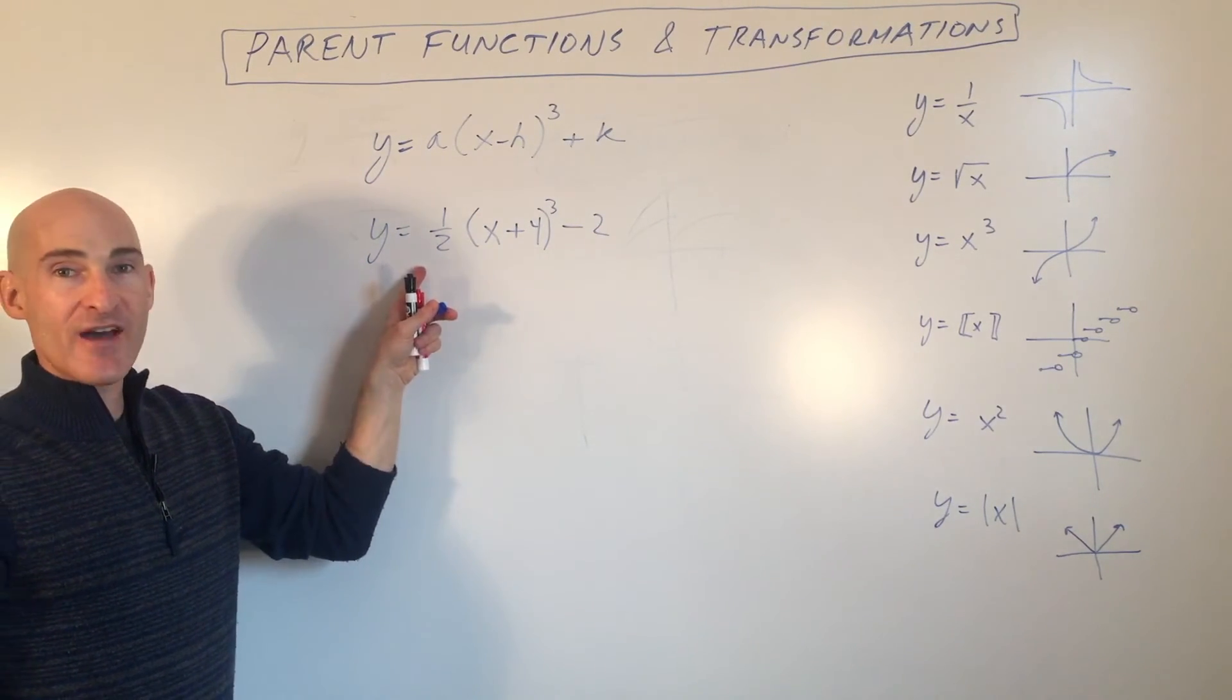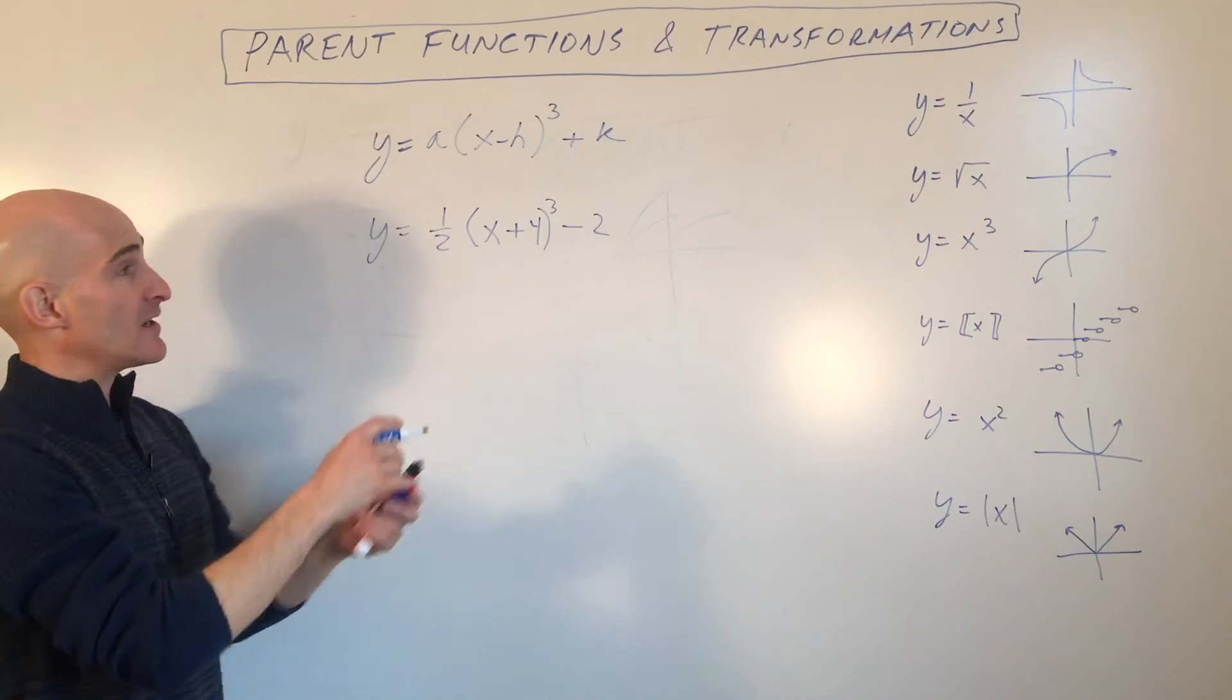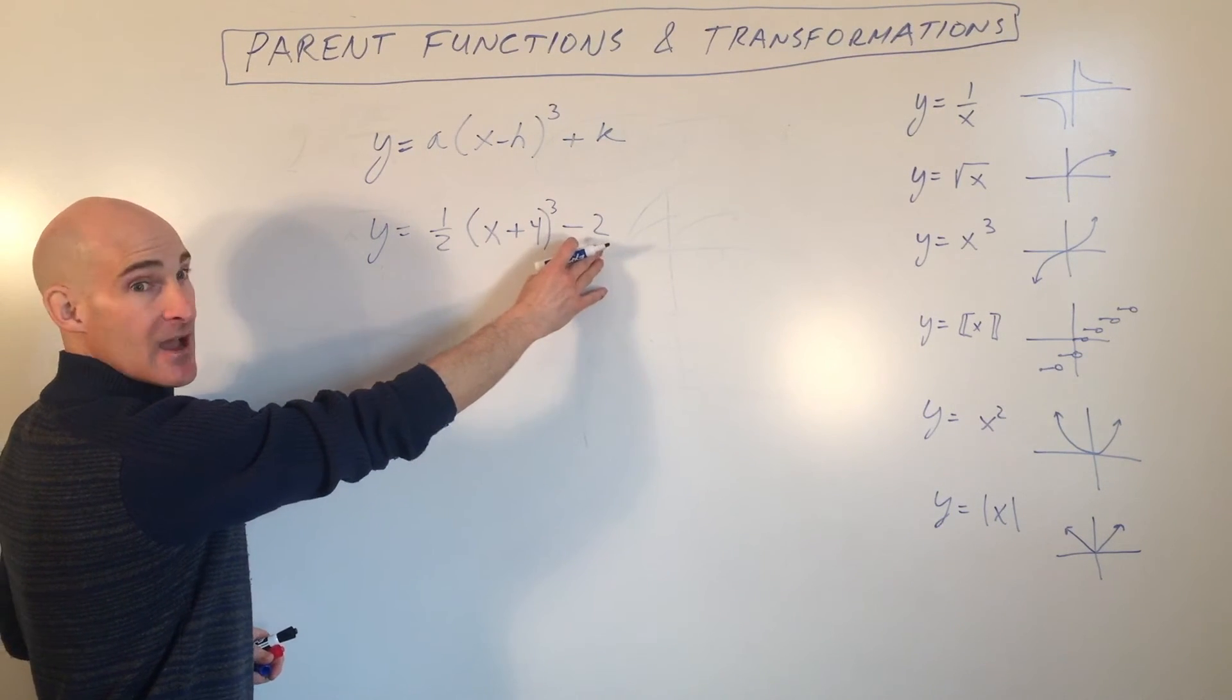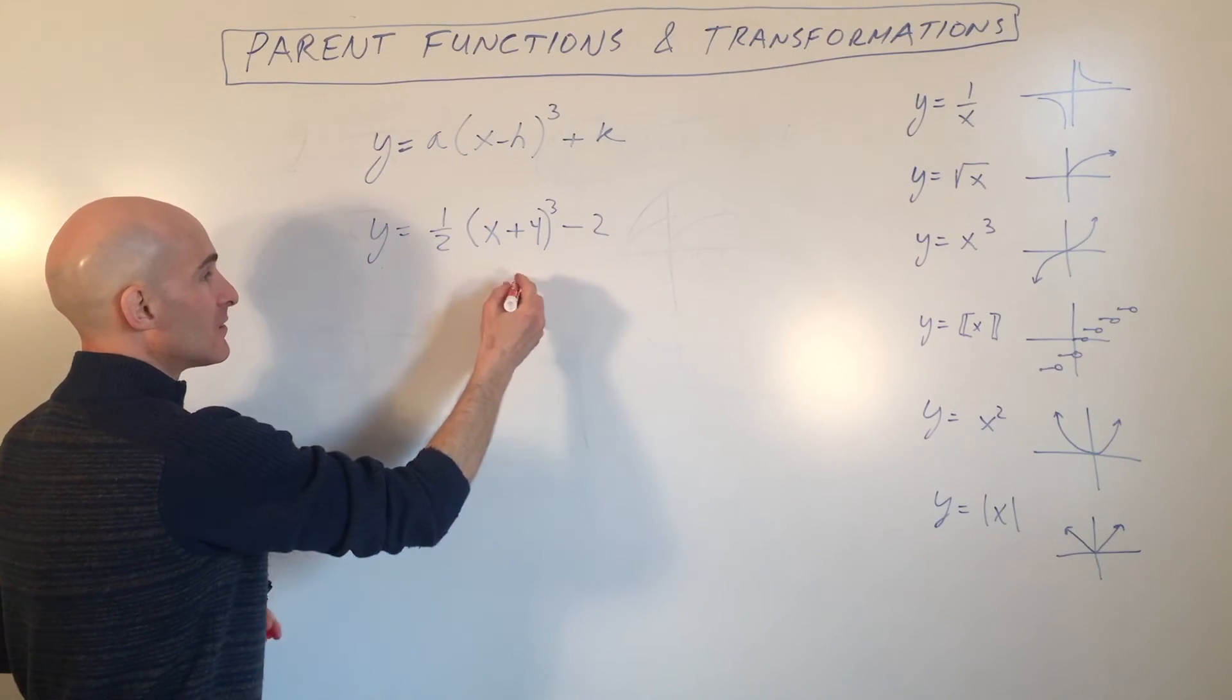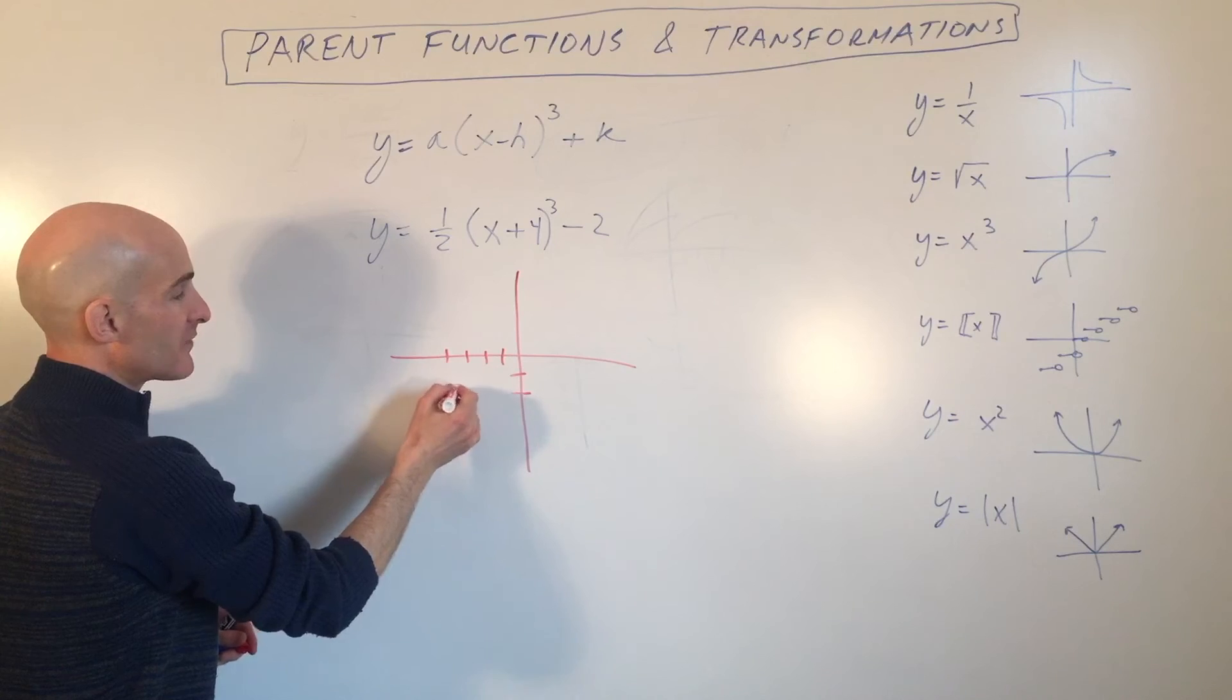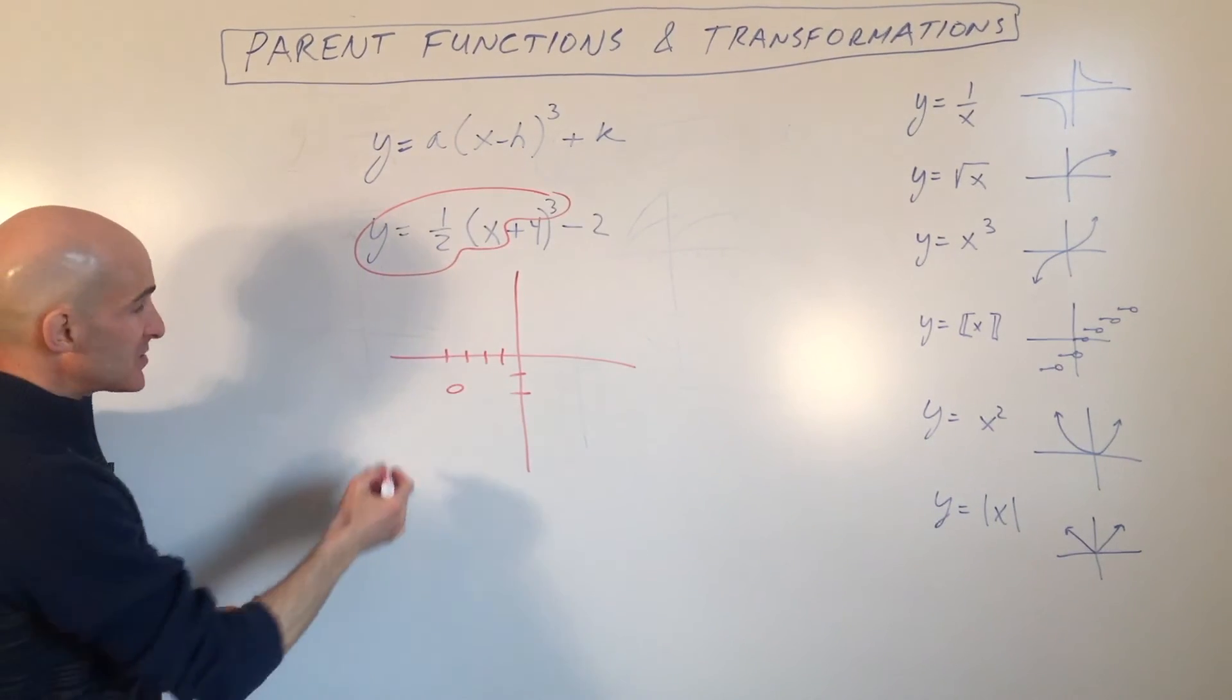So what happens to the graph here? Shifts left 4, down 2. The 1 half is actually compressing it. Now, if we want to say it in order, it actually shifts left 4, working from the inside out. It's a vertical compression, times 1 half. And then it shifts down 2. But as far as an easy way to graph it, what I would do is I would think about graphing from the shifted origin, which is left 4 and down 2. Think of that as your starting point. And then we're going to just focus in on what's left here.